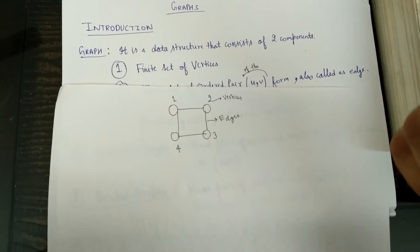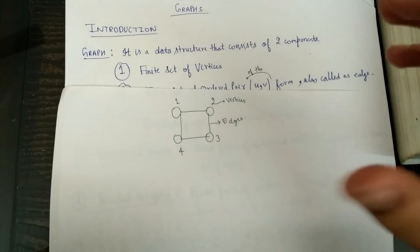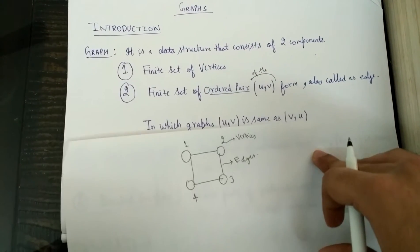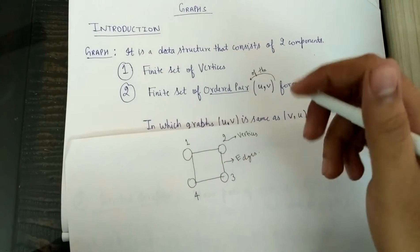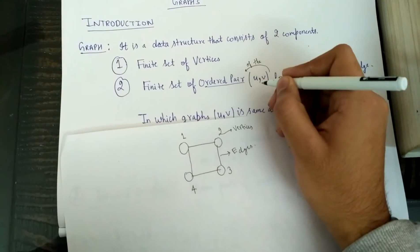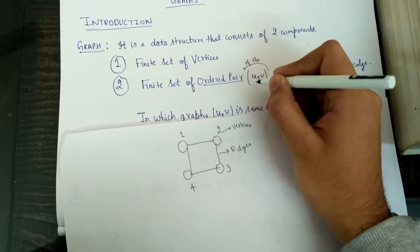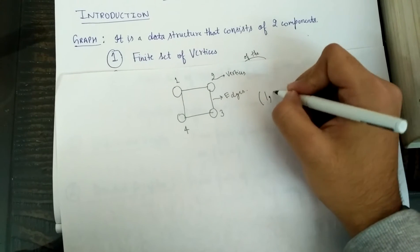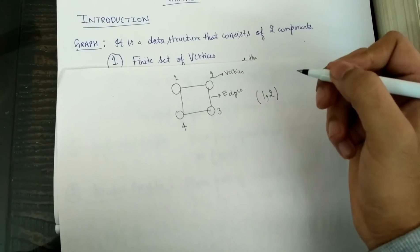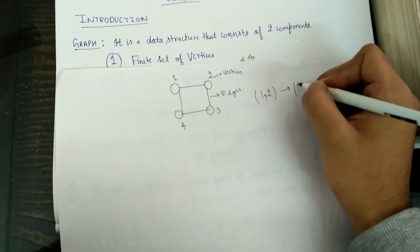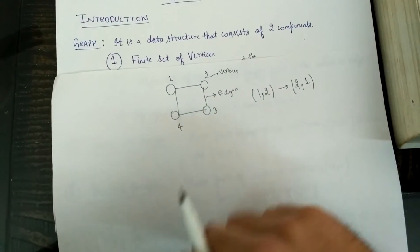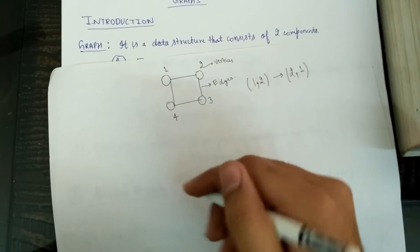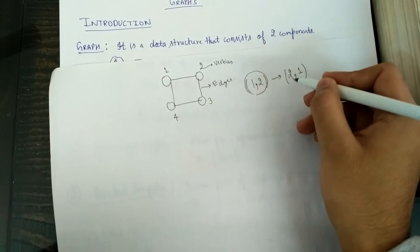Now we have a brief knowledge about graphs. Why did we say these are ordered pairs? Because here the order matters. If you say that 1, 2 is an edge, you can't always say that 2, 1 will also form an edge. We will now see in which graphs we can say that 1, 2 is the same as 2, 1.